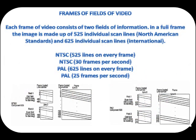Each frame of video consists of two fields of information. In a full frame, the image is made up of 525 individual scan lines, North American Standard, NTSC, and 625 individual scan lines, International, PAL. When the odd and even fields come together, it is known as frame interlacing. In order for a recorder to record longer periods of time, the number of frames per second must be reduced. This reduction causes a jerky motion playback or screen flickering.